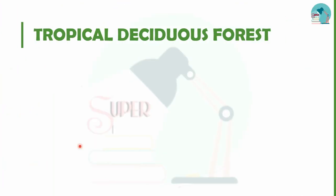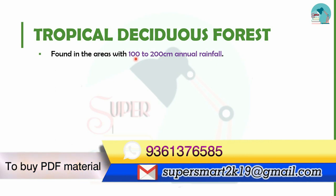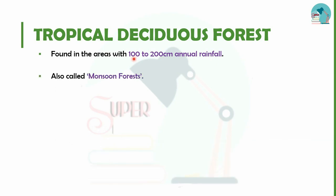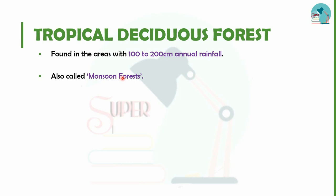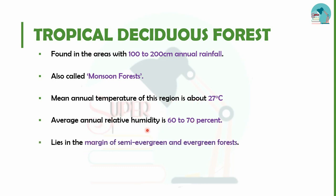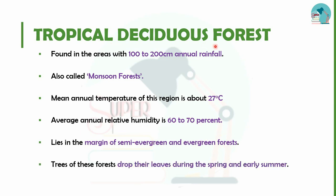The next type is the tropical deciduous forest. In this forest, rainfall ranges around 100–200 cm, making it the monsoon forest. The annual temperature is about 27 degrees Celsius, relative humidity is 60–70%, and trees shed their leaves in spring and early summer. Trees here can reach a height of up to 30 meters.